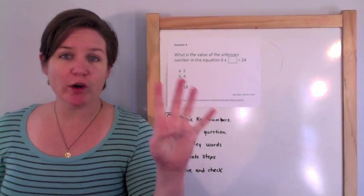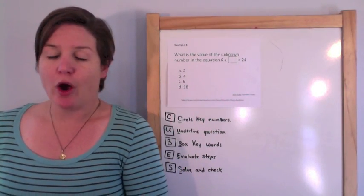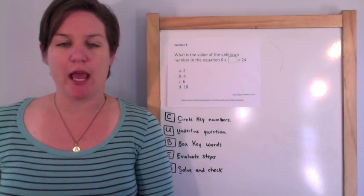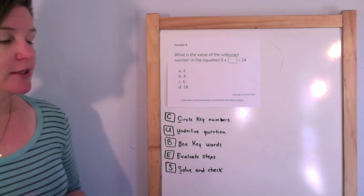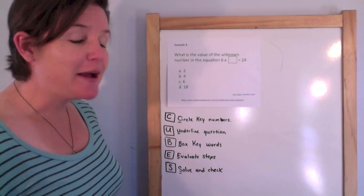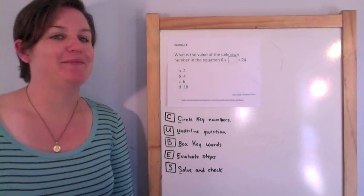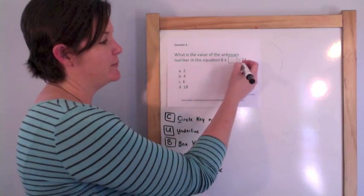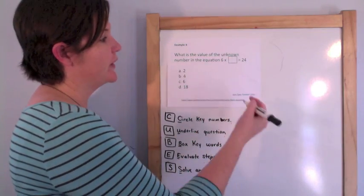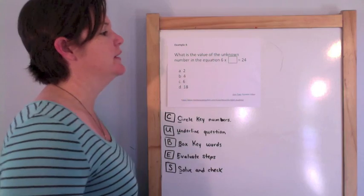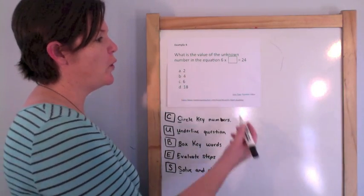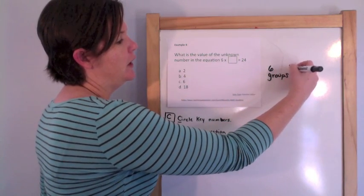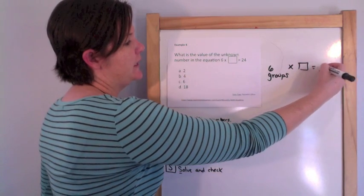We're on example 4. What is the value of the unknown number in the equation 6 times what equals 24? So I've got 6 groups of something equals 24.